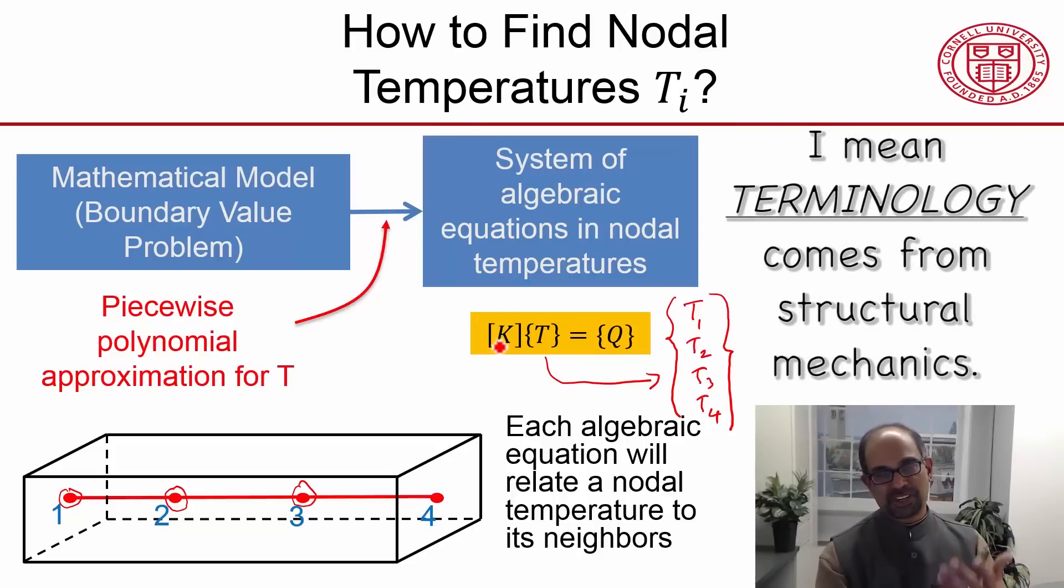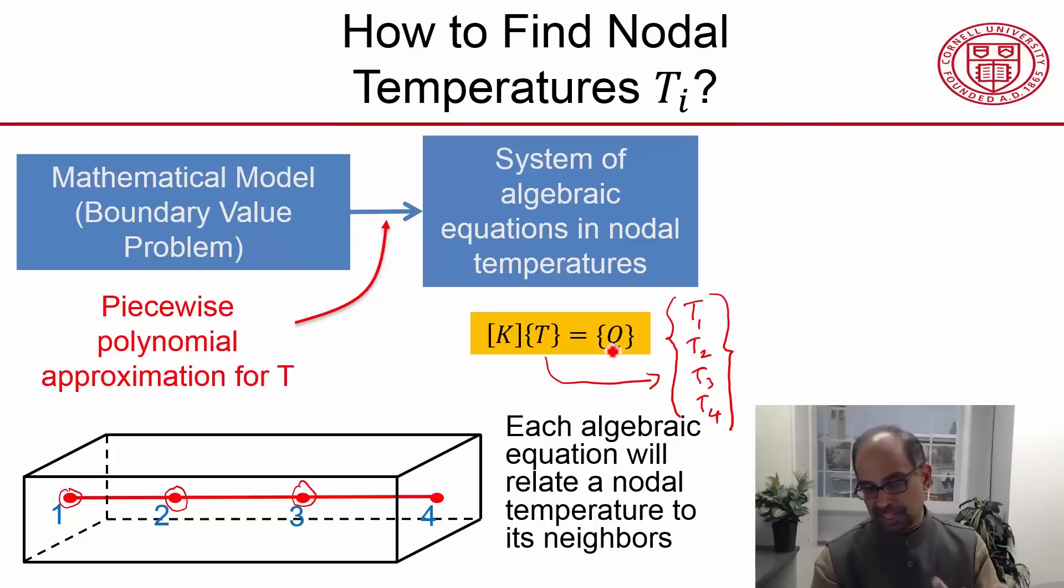This is called the stiffness matrix. It comes from structural mechanics, which we will see later. And that's the force vector. The boundary conditions will affect that. The heat generation term will affect that. Again, bad notation. That's not the heat generation term that we saw earlier.